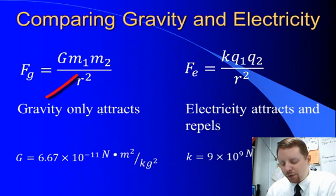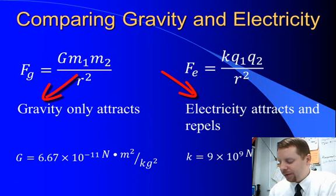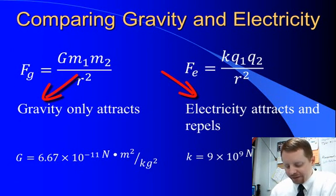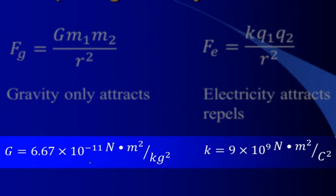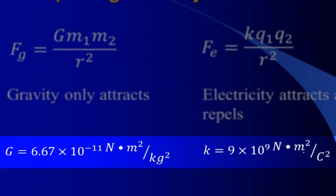The difference here, gravity can only attract. It can't repel. Electricity both attracts and repels. Now, the gravitational constant, 6.67 times 10 to the minus 11 newton meters squared per kilogram squared. Same form, but slightly different units. The electrostatic constant is 9 times 10 to the ninth newton meters squared per coulomb squared.